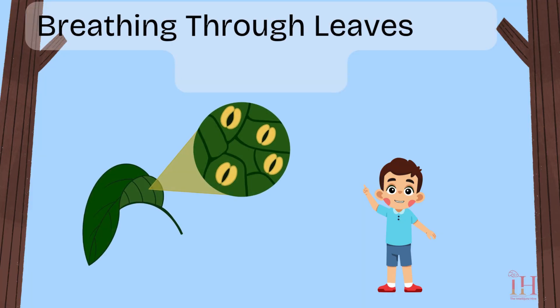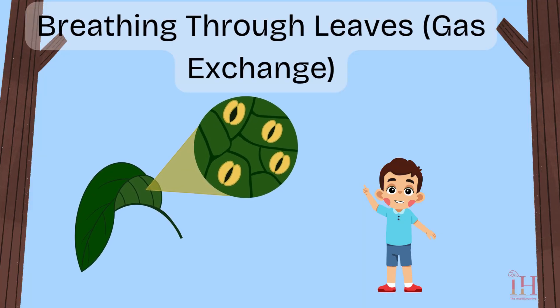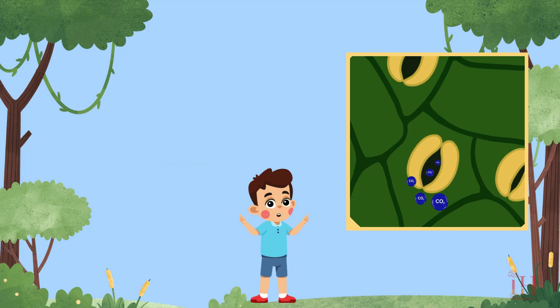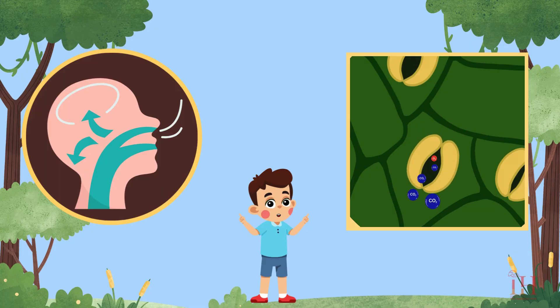Plants breathe through tiny holes in their leaves called stomata. These tiny openings help plants take in air and let gases out, kind of like how we breathe through our nose and mouth.